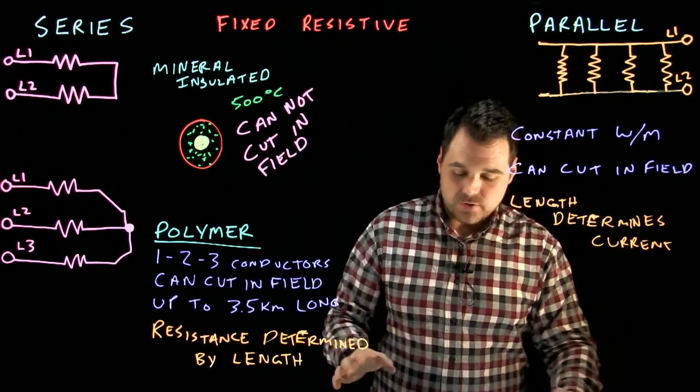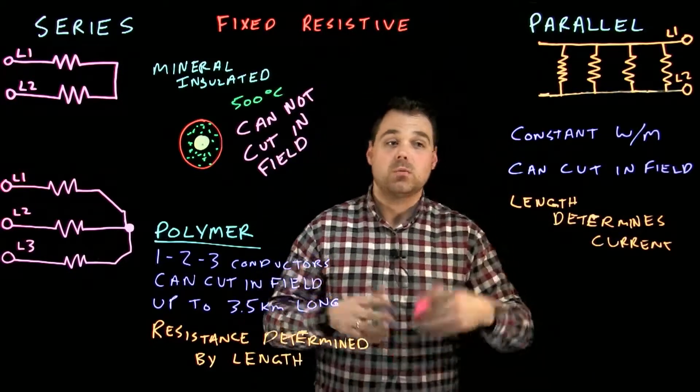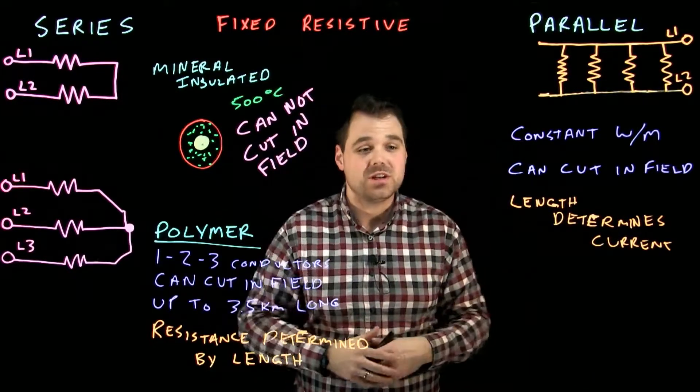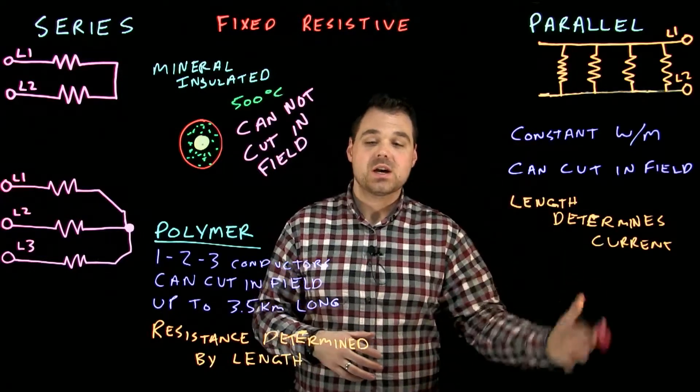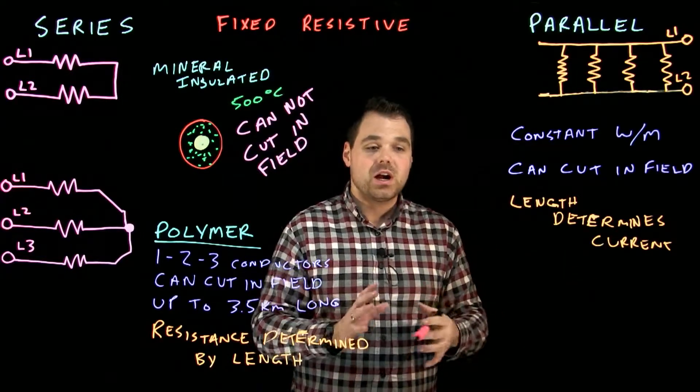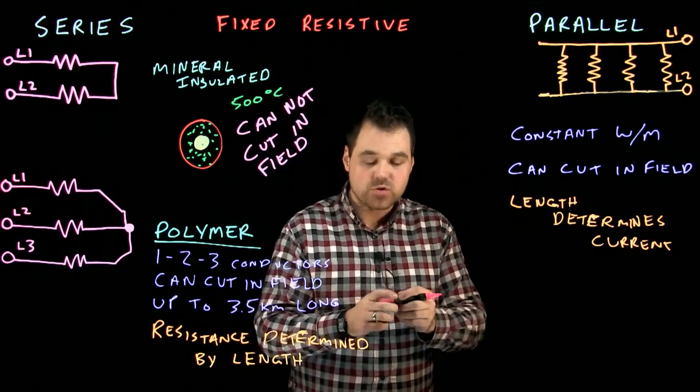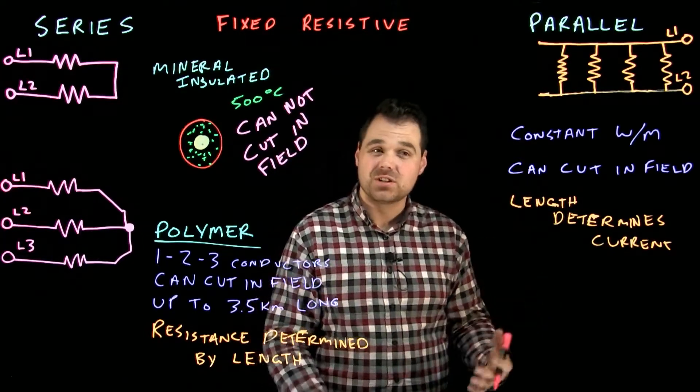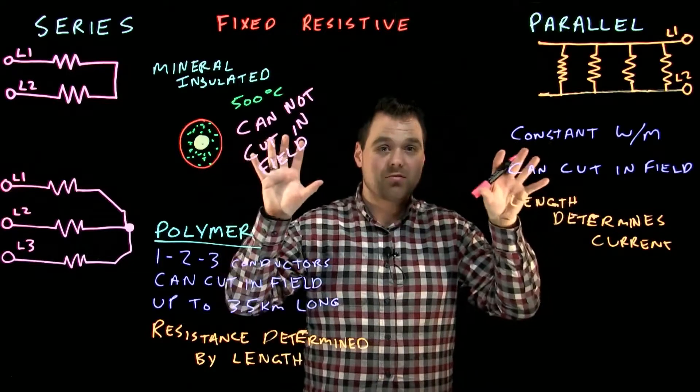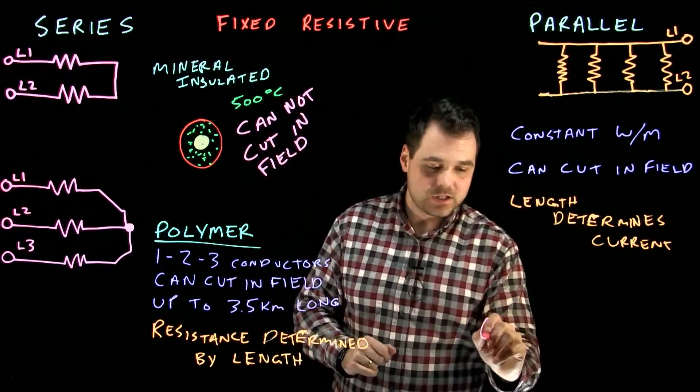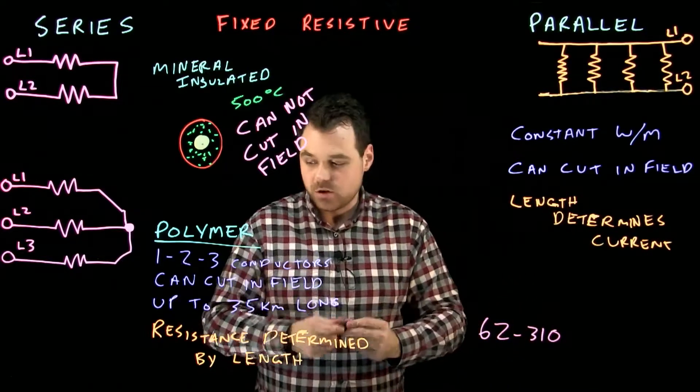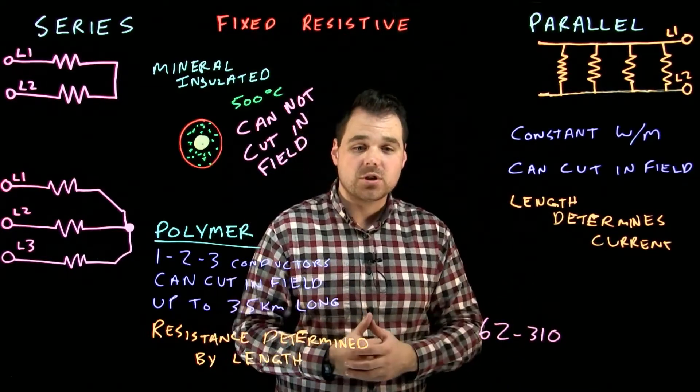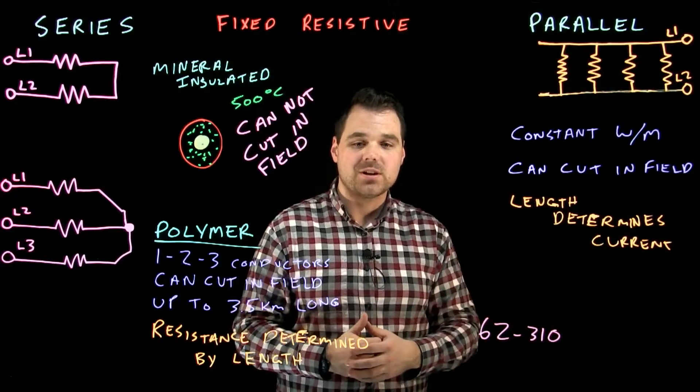So that's the two different types of the fixed resistant heat trace that we're going to talk about. In another video, we are going to discuss some self-regulating and some skin effect heat trace. Just as a reference, all of your heat trace rules, you can actually find in section 62. Fixed resistive electric heating. And it is 62-310. Just if you're curious, you can check that out. Thanks a lot for watching. Make sure you watch the next video on the other kinds of heat trace. Thanks.